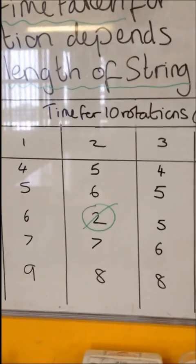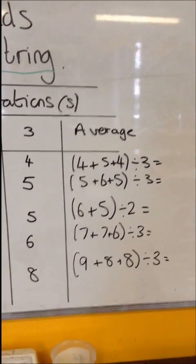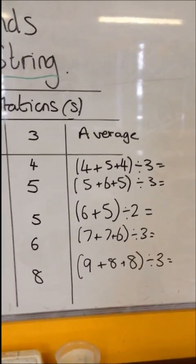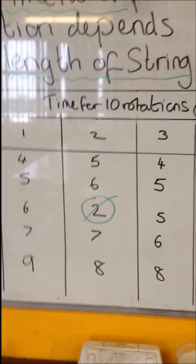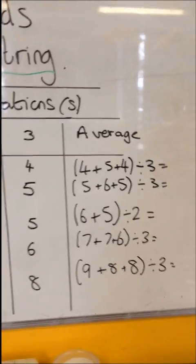The next set of results, I've got 7, 7, 6, so that is 7 plus 7 plus 6 equals on your calculator and divide it by 3. And then 9 plus 8 plus 8, again equals on your calculator and divide it by 3.